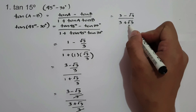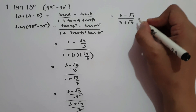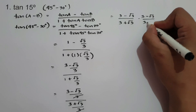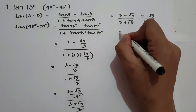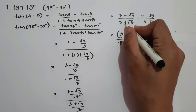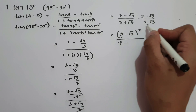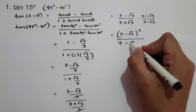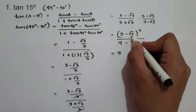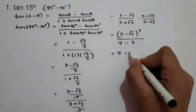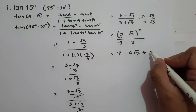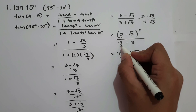Whenever we have this kind of expression, we conjugate to eliminate the radical sign in the denominator. Multiplying by (3 - √3)/(3 - √3): the numerator gives (3 - √3)², and the denominator uses difference of squares. In the numerator: 3² = 9, minus 2·3·√3 = -6√3, plus (√3)² = 3. The denominator: 9 minus 3 equals 6.